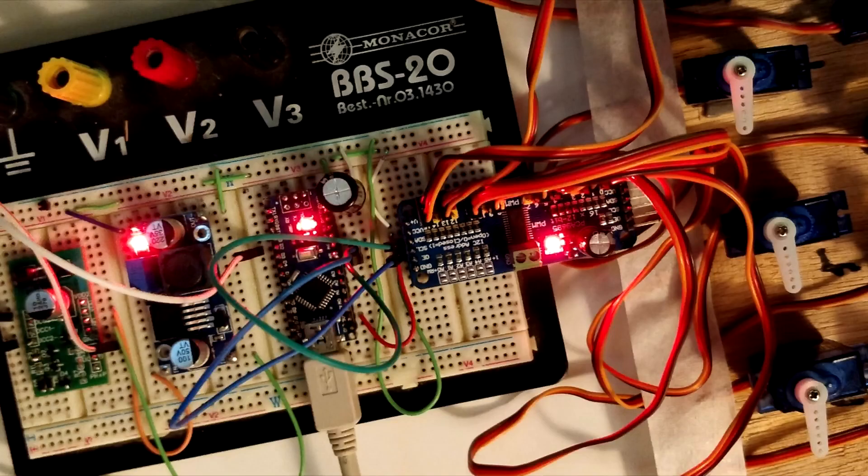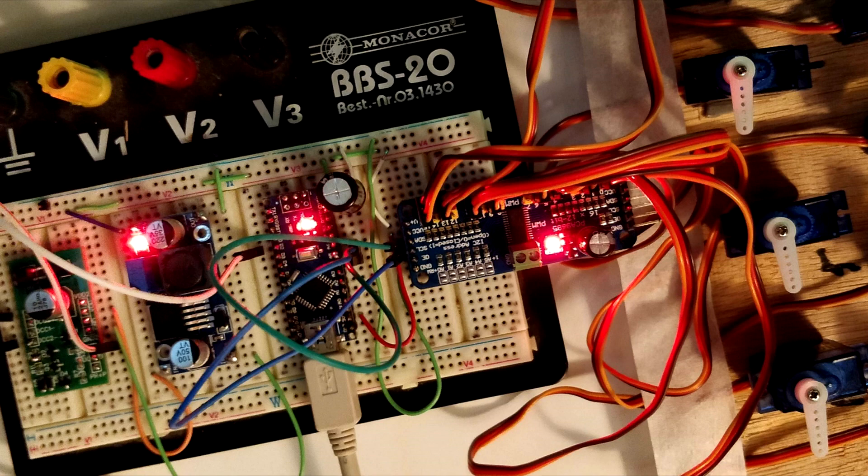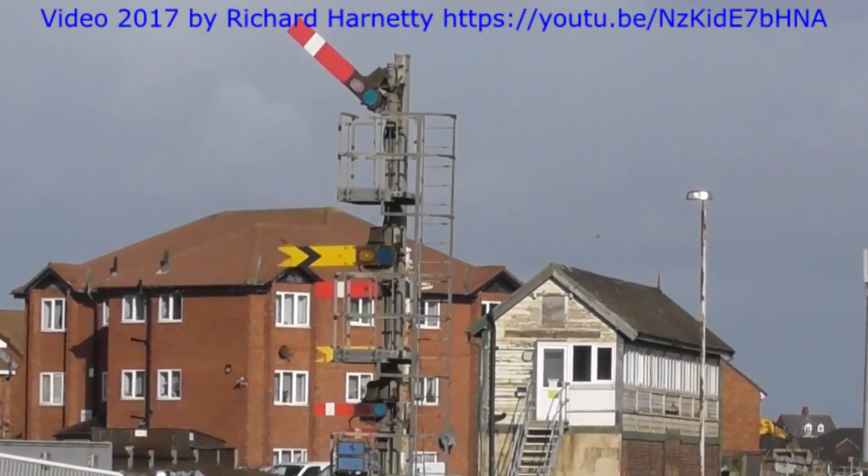If you use a servo controller like the one I built starting in video number 17, you can typically adjust upper and lower boundaries of the movement as well as the speed in both directions individually. But of course for true modelers, or shall I say rivet counters,